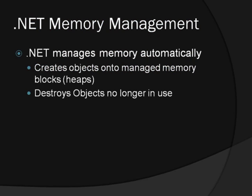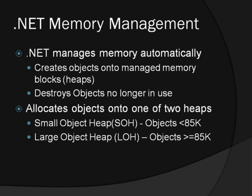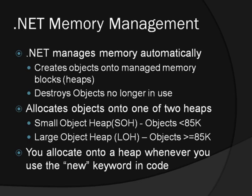Unlike native C or C++ applications, .NET isolates developers from the application memory, taking care of creating and destroying objects. When your application executes, the .NET execution engine allocates two chunks of memory called the small object heap for objects less than 85k, and the large object heap for objects greater than or equal to 85k. Whenever you use the new keyword in your code, the object you are creating is allocated onto one of the heaps based on its size.